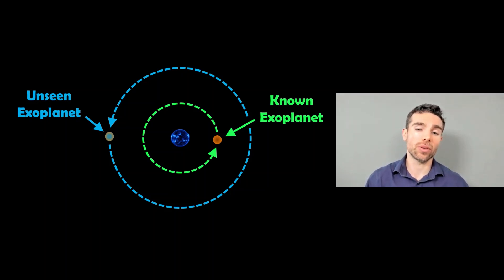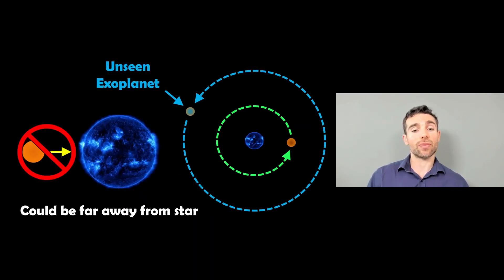That's going to relate to this unseen one that we've got in the system here. I've placed it outside the orbit of the known one, so it's an unseen exoplanet that we for some reason cannot see or detect at the moment.